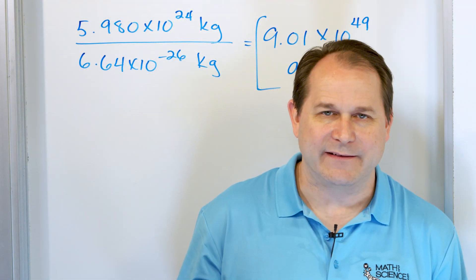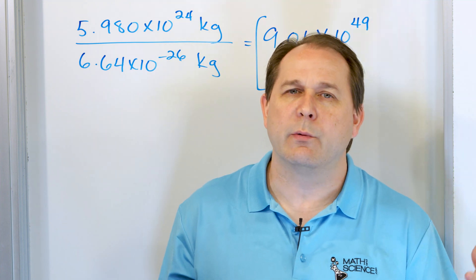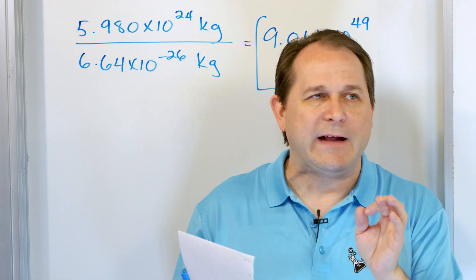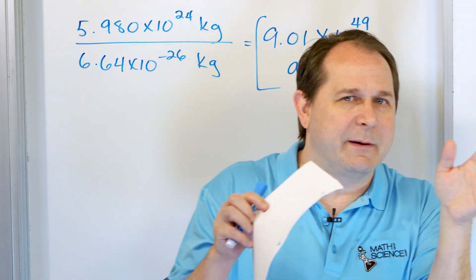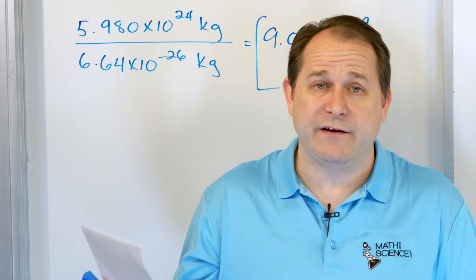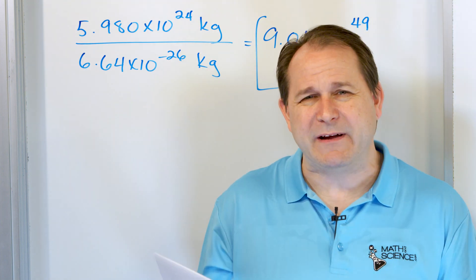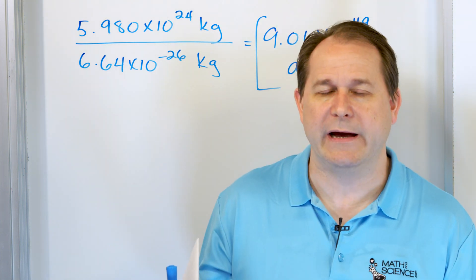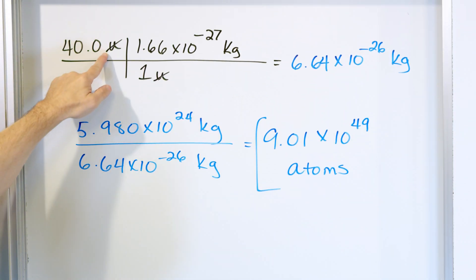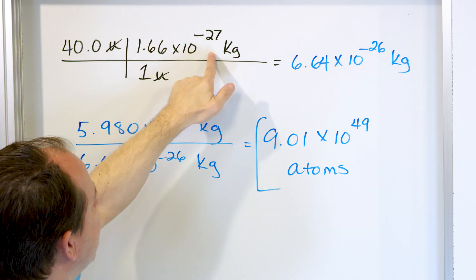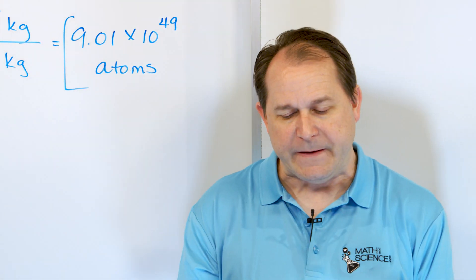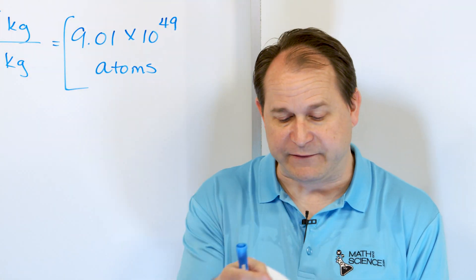Keep in mind this is not a chemistry class. We will get to atomic mass units later when we talk about nuclear physics. In the beginning here I left out a lot of details about AMU and the mass of a proton. Even if you don't know exactly what an AMU is, as long as you know it's a unit of mass equal to a certain number of kilograms, you can convert and solve the problem without fully understanding the unit yet.